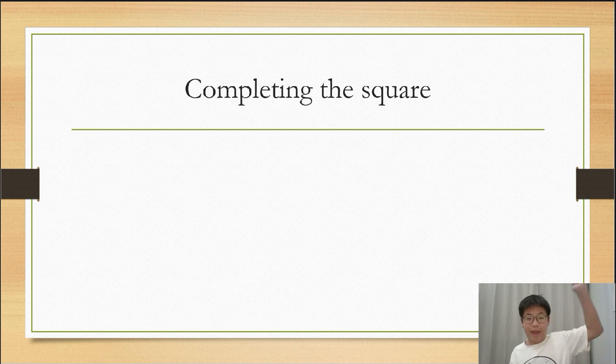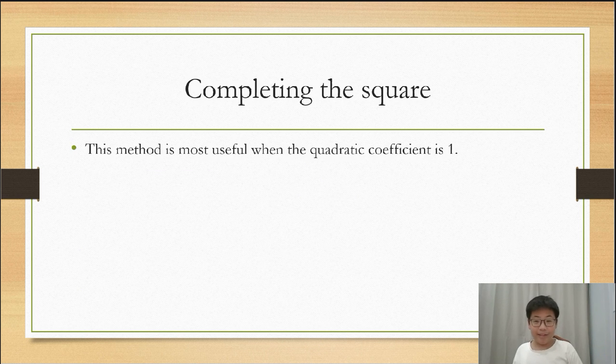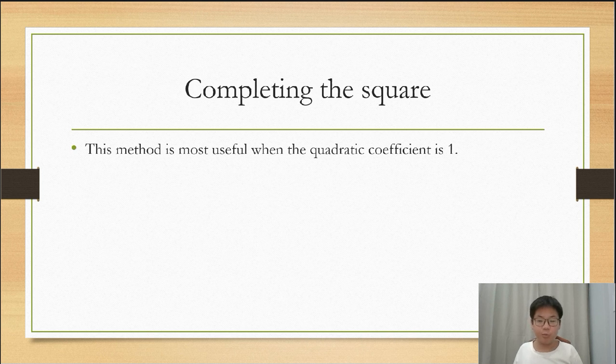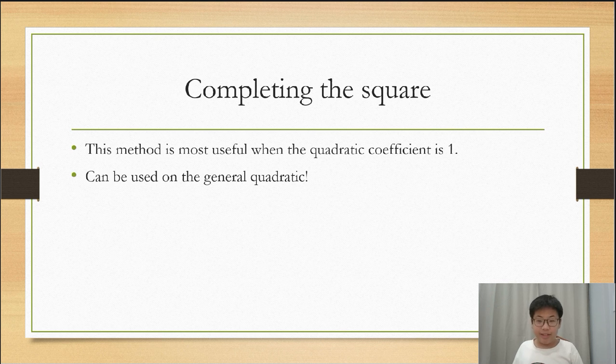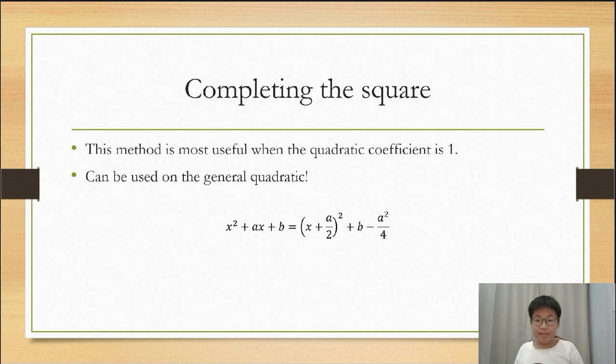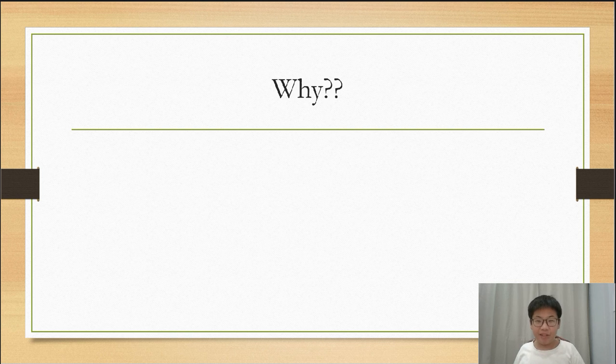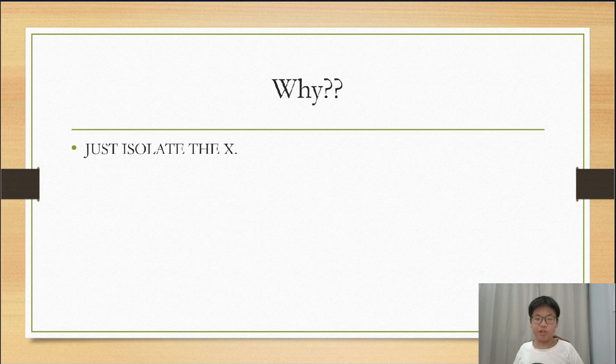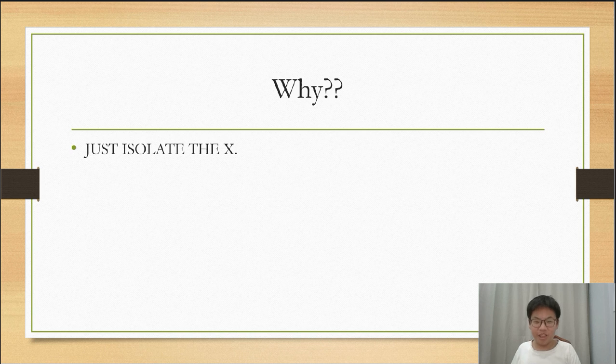Now for completing the square. Unlike factorization, this method is most useful when the quadratic coefficient is 1. However, this comes with a greater advantage: it works on the general quadratic. This method can be used when it is almost impossible to find a factorization. And why do we need to complete the square? Since there is one X term, you can solve the expression just like how you solve linear equations. Just isolate X. And this will come in handy later when sketching quadratic graphs.